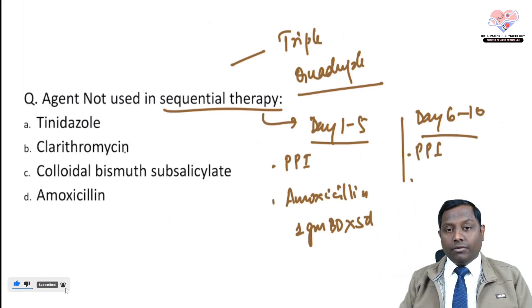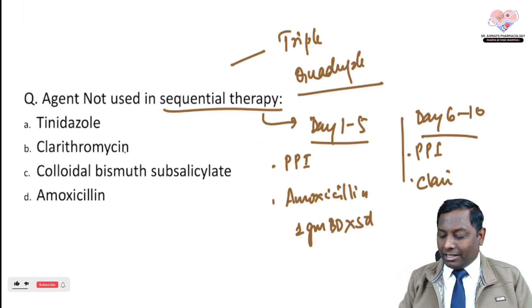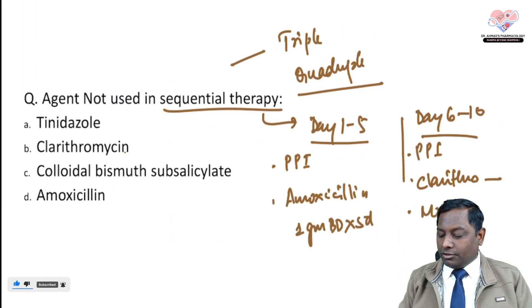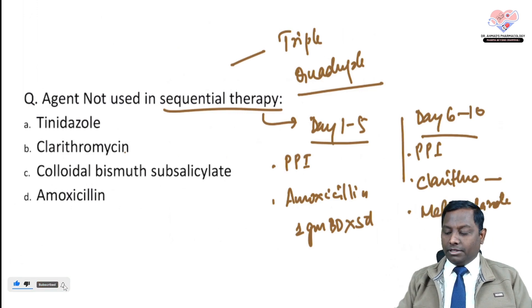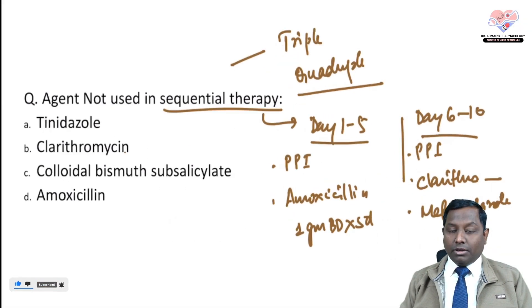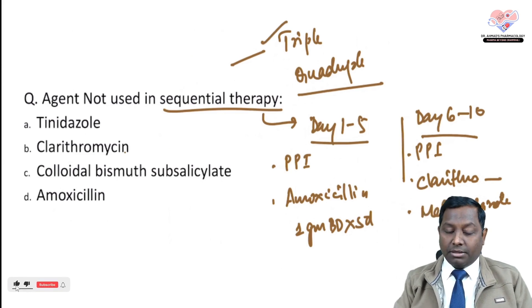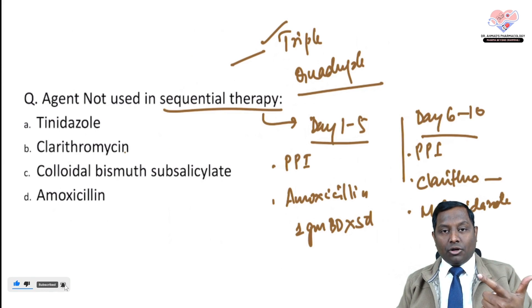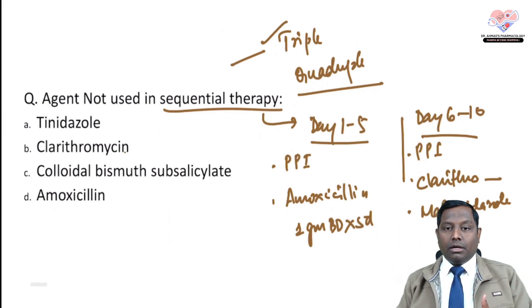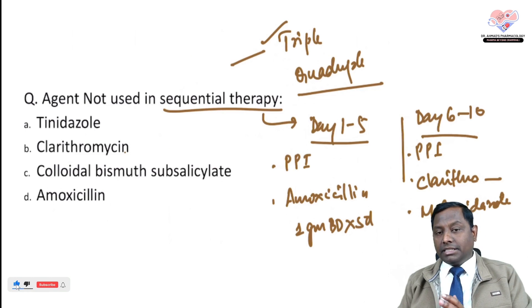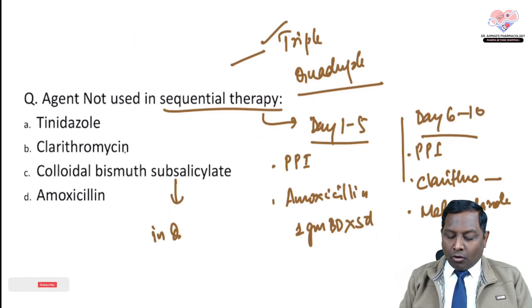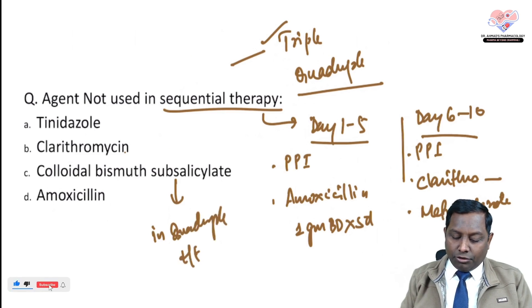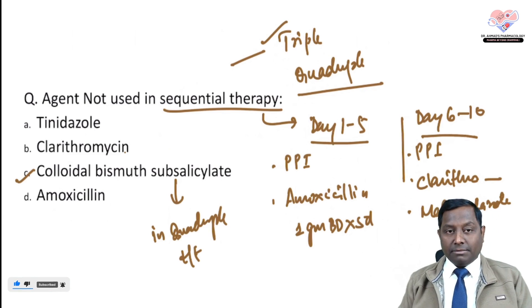After the first five days, the PPI is continued and now clarithromycin is added along with metronidazole or tinidazole, depending on availability. This uses the same antibiotics as triple therapy — clarithromycin, amoxicillin, metronidazole, and PPI — but given in sequence. Colloidal bismuth subcitrate/subsalicylate is mainly used in quadruple therapy.